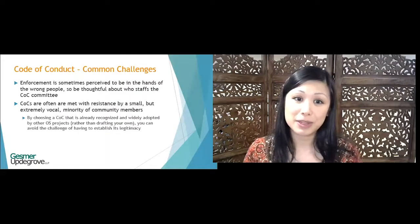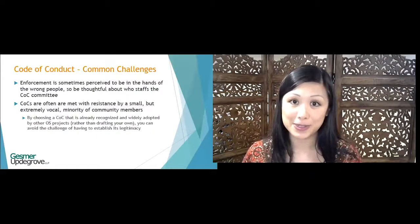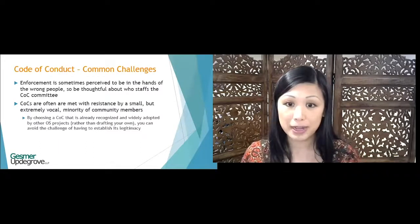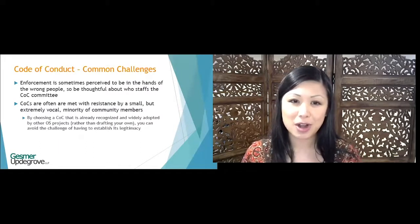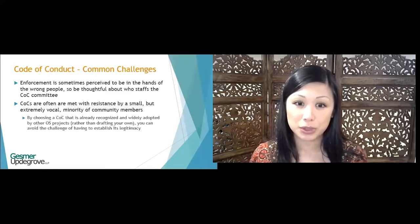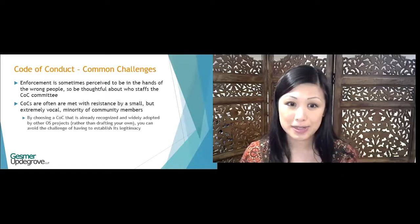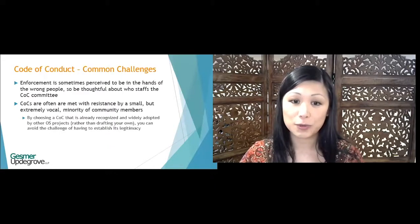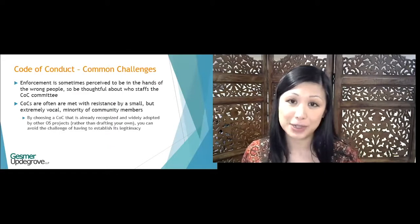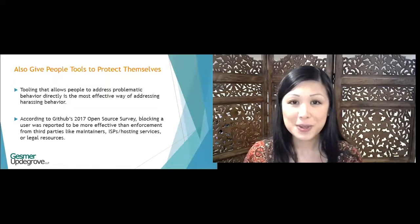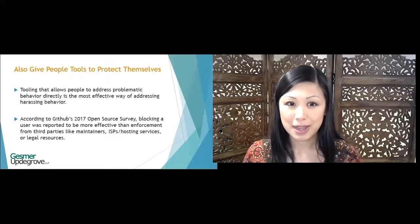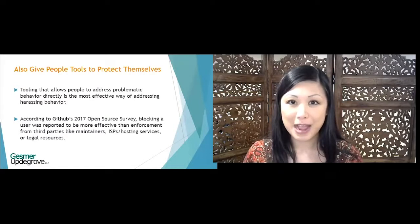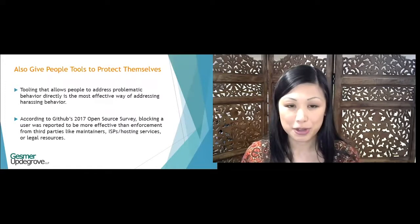Enforcement is sometimes perceived to be in the hands of the wrong people, so be really thoughtful about who staffs your code of conduct committee. Note that codes of conduct are often met with resistance by a small but extremely vocal minority of community members. By choosing a code of conduct that's already recognized and widely adopted by other open source projects, you avoid the challenge of having to establish its legitimacy. Also, give people tools to protect themselves — tools that allow people to block other users engaging in bad behavior are often more effective than enforcement from third parties.